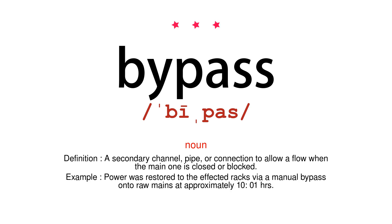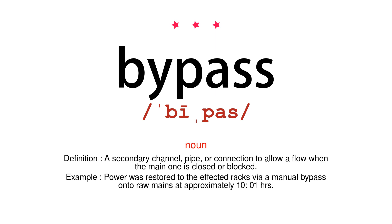Noun. Definition: a secondary channel, pipe, or connection to allow a flow when the main one is closed or blocked. Example: power was restored to the affected racks via a manual bypass onto raw mains at approximately 10:01 hours.